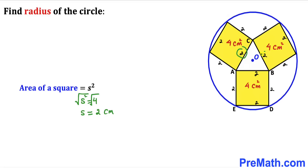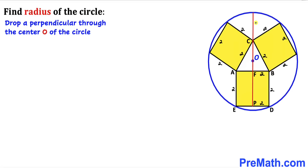All side lengths of these squares are 2 centimeters. We drop a perpendicular that passes through the center O, through the point of contact C, and through points F and P, which are the midpoints of square ABDE. So distance AF equals FB, and since the whole side is 2, each half is 1 centimeter. Likewise, EP equals 1 and PD equals 1 centimeter.